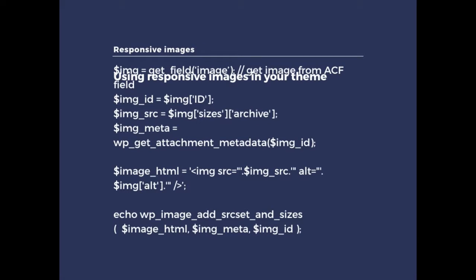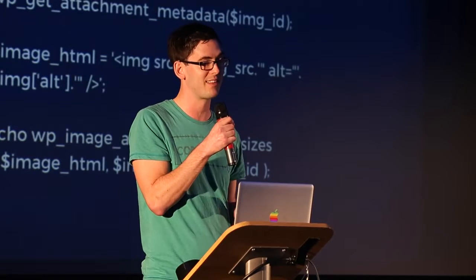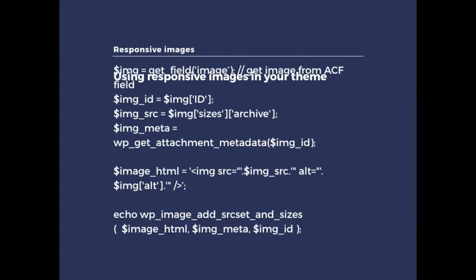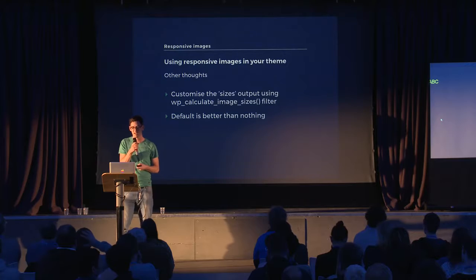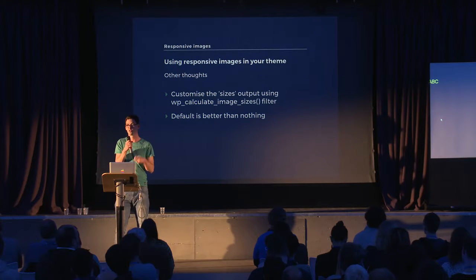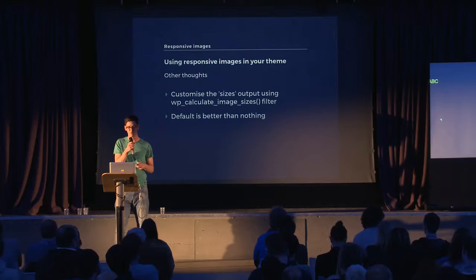If you can read the code: on the top line, I'm getting an image from something like an Advanced Custom Field — getting the image ID, image source, and image meta, sticking that all in a string I'm calling image HTML. Then I'm running that through a function called wp_image_add_srcset_and_sizes, which does exactly what it says on the tin. It gives you something like this: the source is at the top, the source set lists all the image sizes in WordPress, and it even generates a sizes attribute for you. But that sizes attribute is actually a best guess. Whenever you're building this into your themes, you may want more control, in which case you can use the wp_calculate_image_sizes filter. But even if you don't use that filter, the default functionality is much better than nothing.